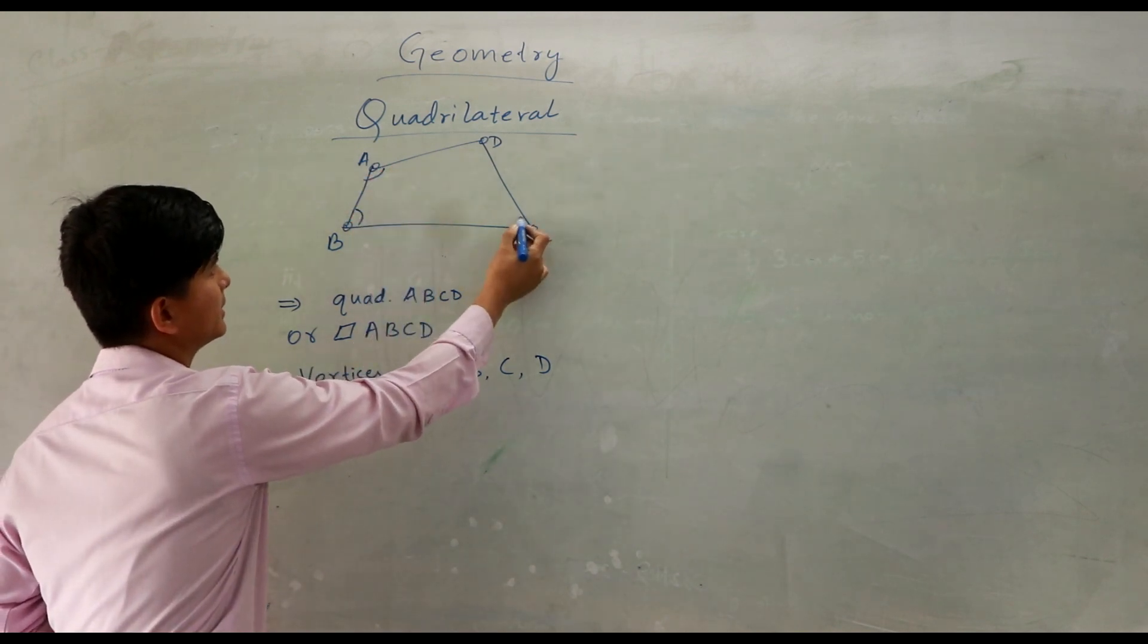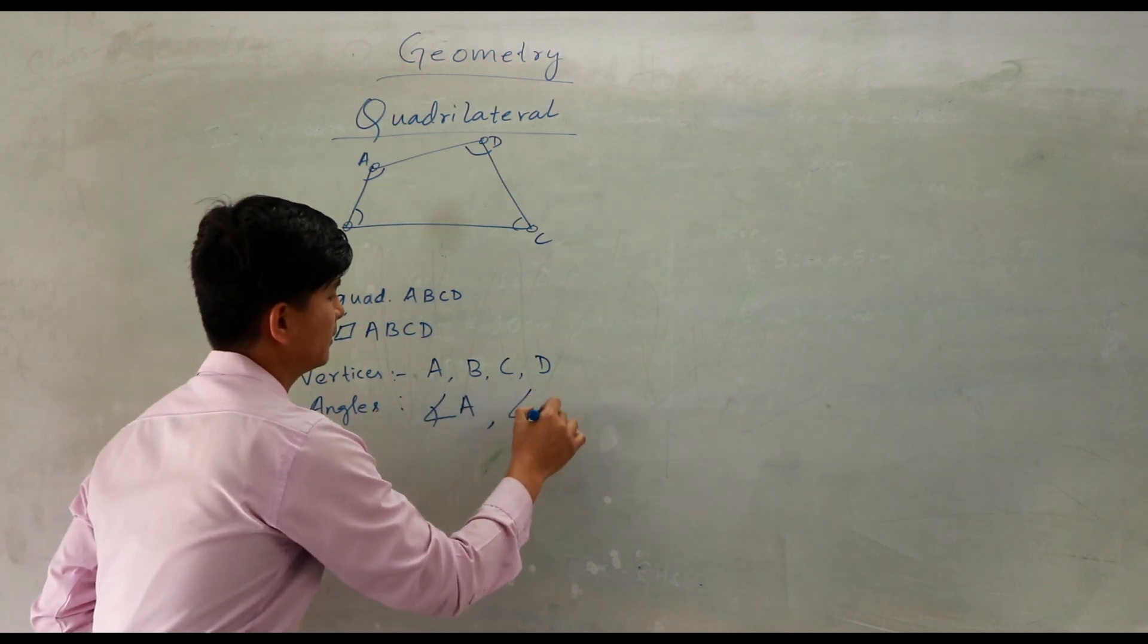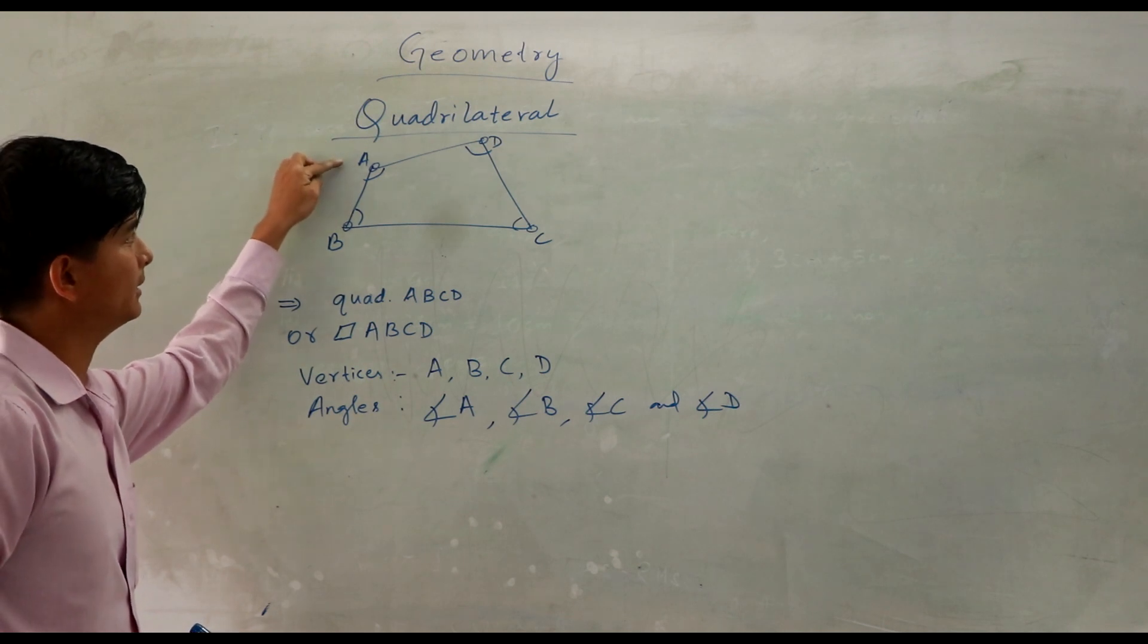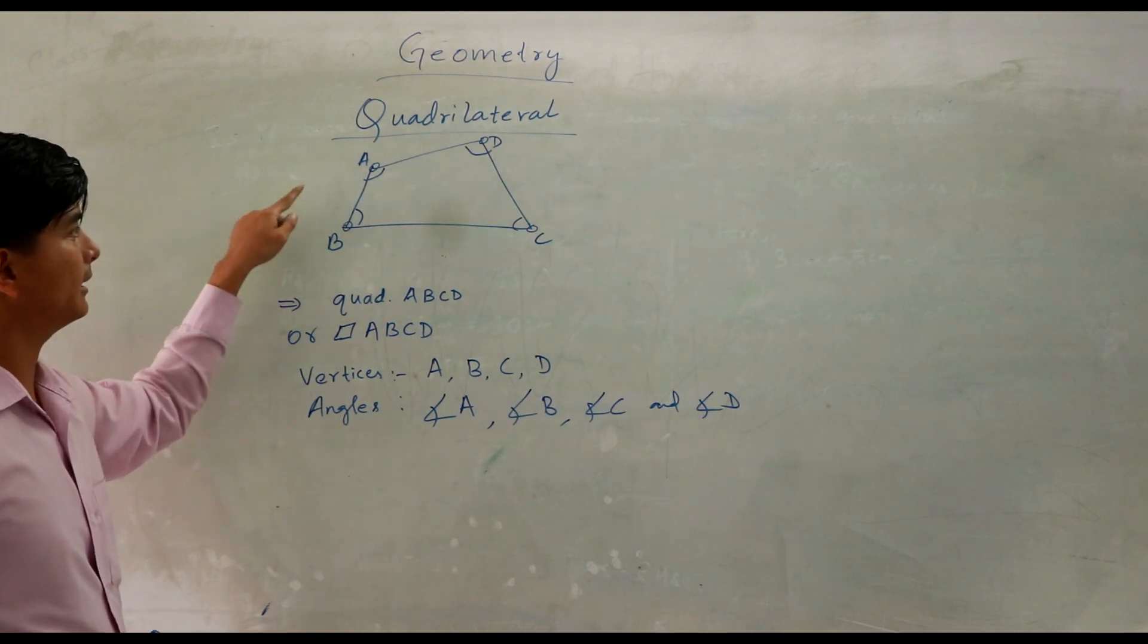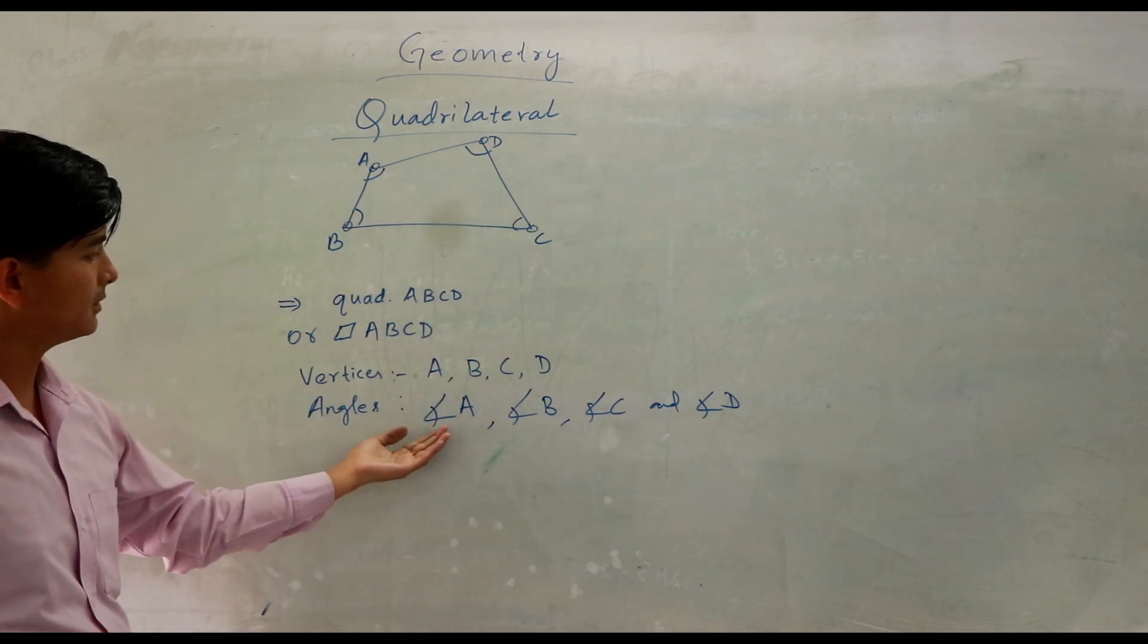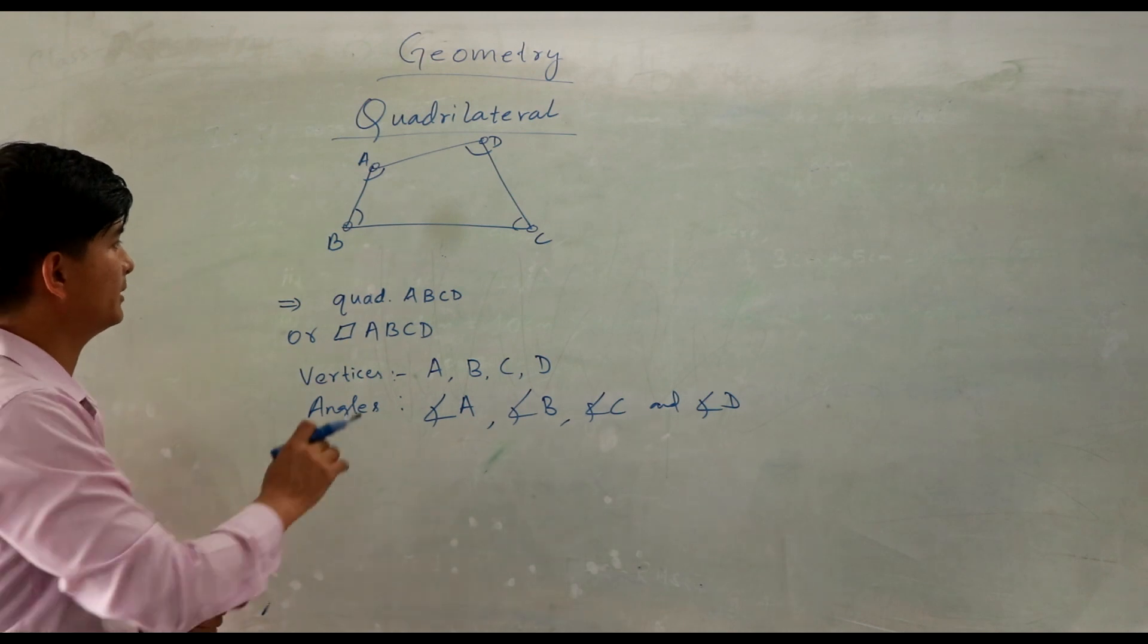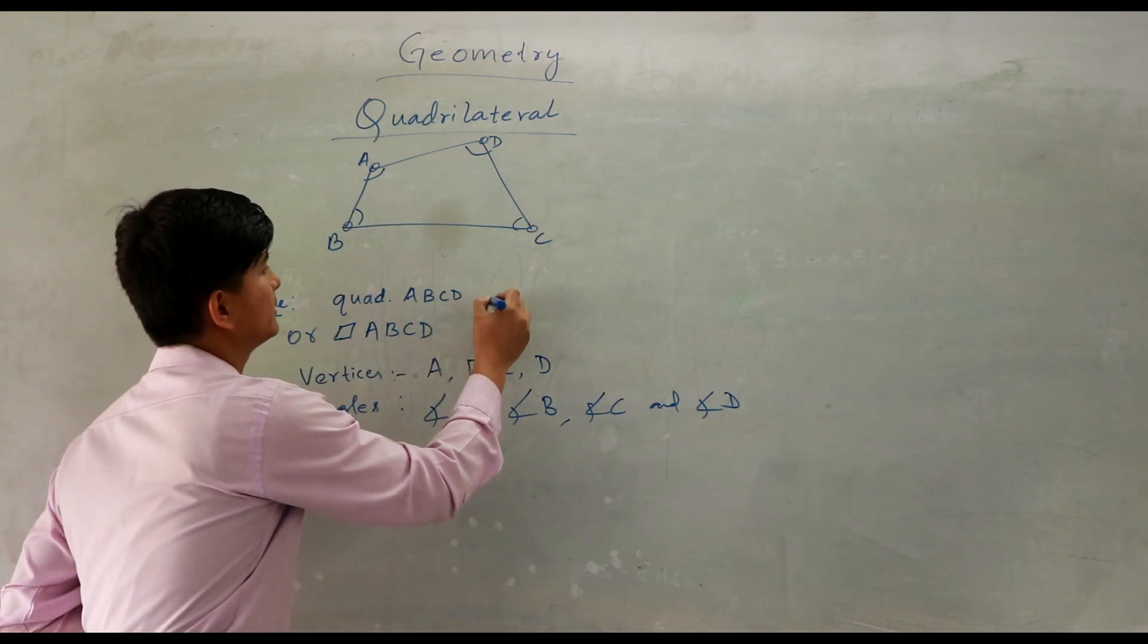This is our angles, four angles. These are the four angles, angle A, angle B, angle C, and angle D. You can write angle A as angle DAB, angle B as angle ABC, angle C as angle BCD. The vertices are ABCD and angles are A, B, C, D. This name is called quad ABCD or quadrilateral ABCD.